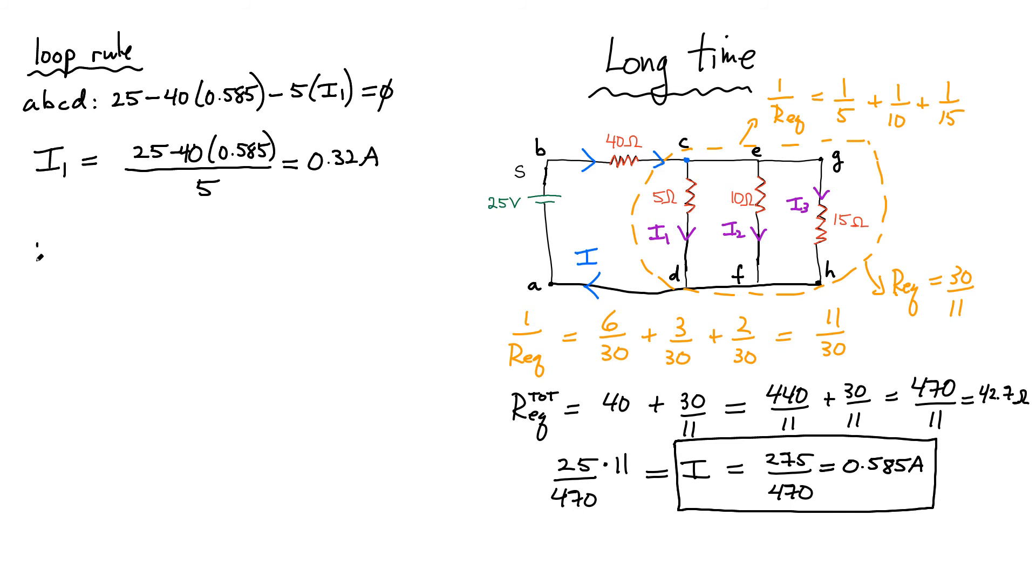For I2 we can repeat the same steps. You get 25 minus the voltage drop across the 40 ohm resistor, 0.585. Now instead of dividing by 5, we're dividing by 10. I can multiply this by 5 and then divide by 10, you should get 0.16. In the last case, I3, again first two terms are the same, 0.585, and now divided by 15. If I multiply by 10 and divide by 15, I should get roughly 0.11 amps.